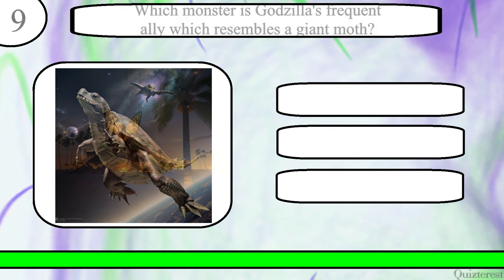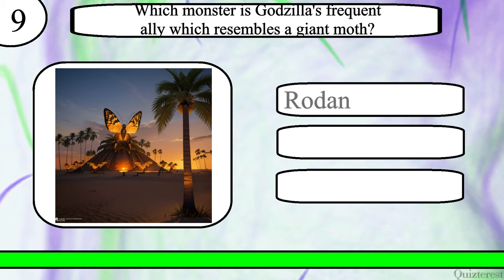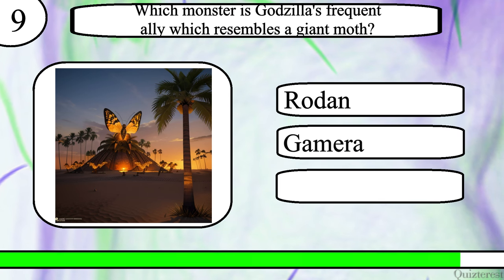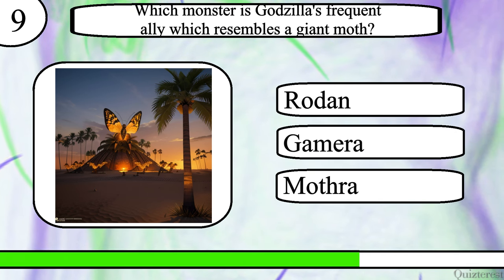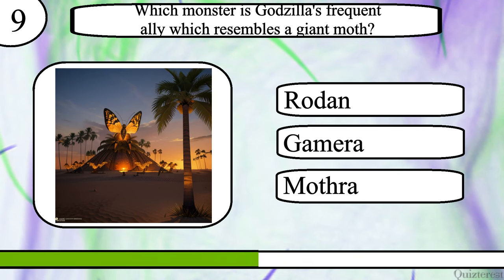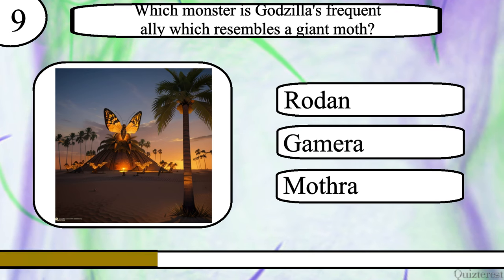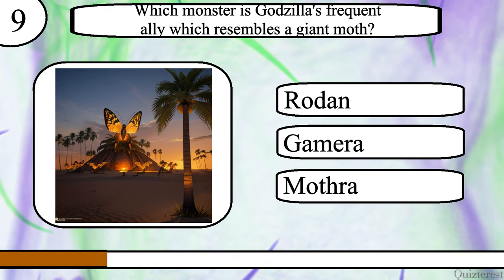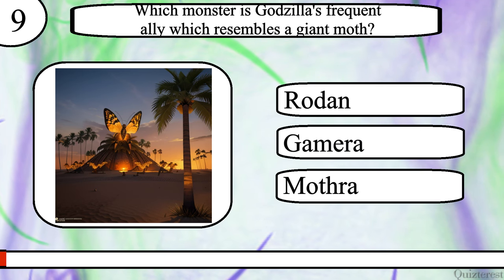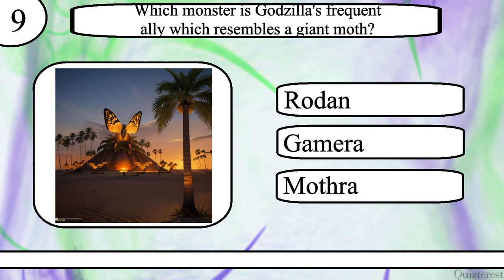Question 9. Which monster is Godzilla's frequent ally which resembles a giant moth? Rodan, Gamera, or Mothra? The correct answer is Mothra.